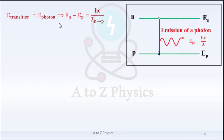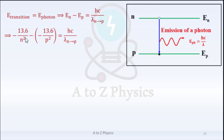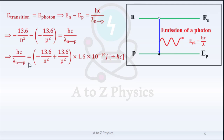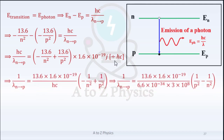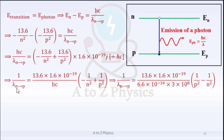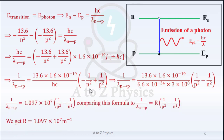The energy of the photon equals EN minus EP equals Hc over lambda. So: −13.6/N² minus (−13.6/P²) = Hc over lambda. Therefore, Hc over lambda = −13.6/N² + 13.6/P², multiplied by 1.6×10⁻¹⁹ joules to convert from electron volts to joules. Dividing by Hc, we get: 1/lambda = (13.6 × 1.6×10⁻¹⁹)/(Hc) × (−1/N² + 1/P²).